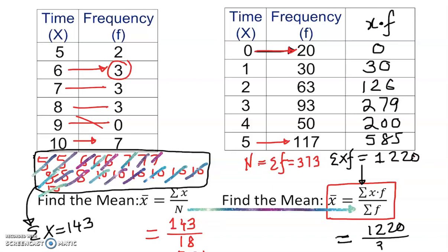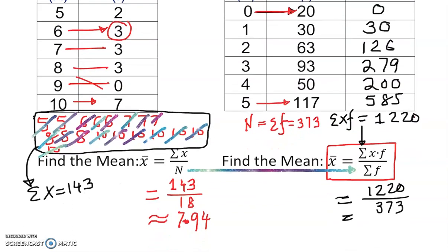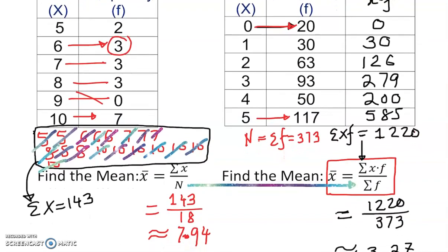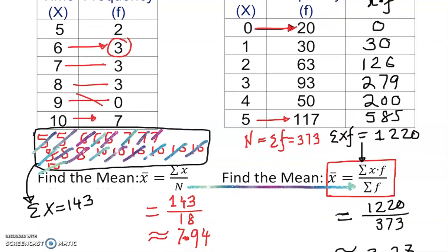Once we divide 1220 by 373, the calculator gives us approximately 3.27. I'll use an approximation sign here because we are rounding. So the mean from the frequency distribution table for the second example is approximately 3.27.